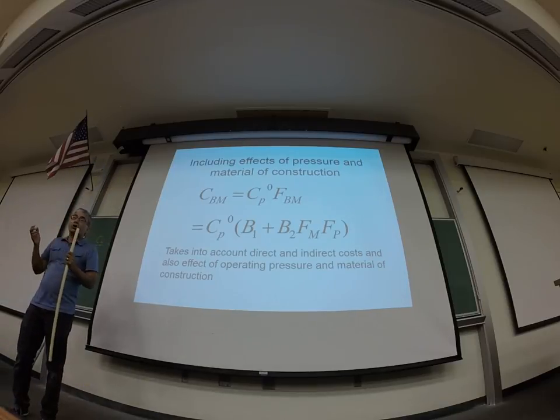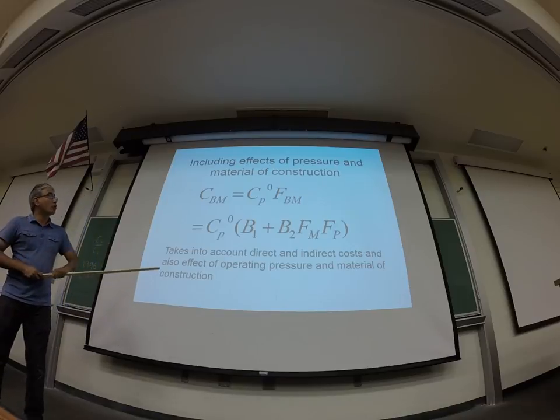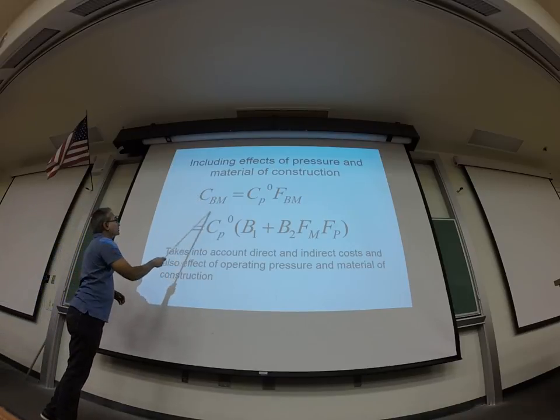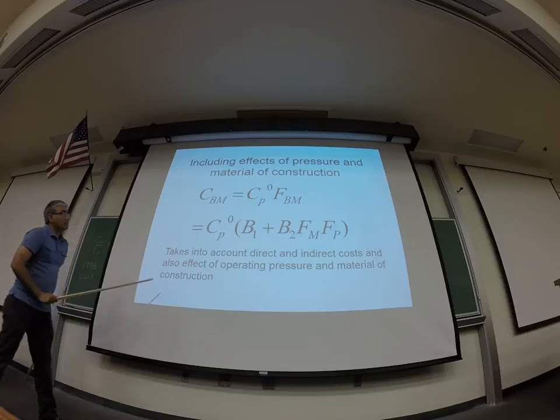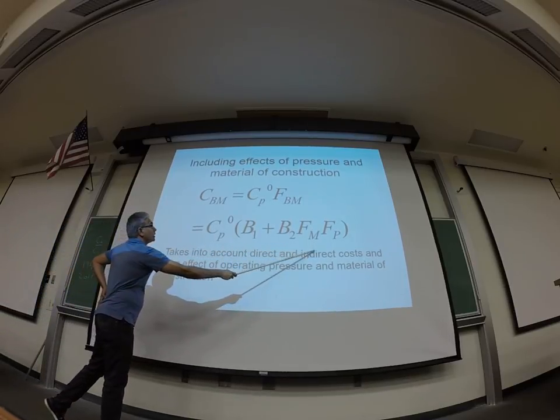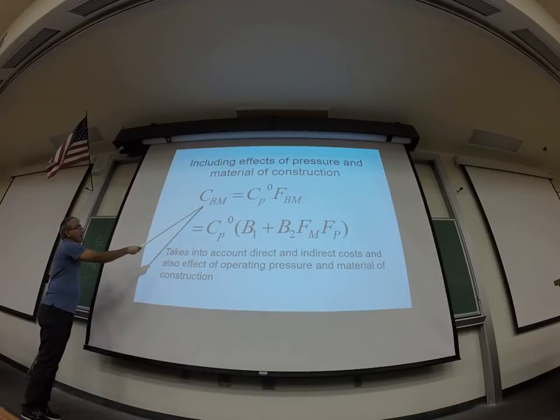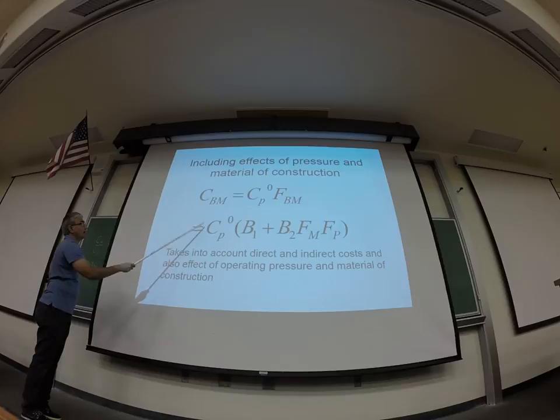The equipment just sitting in your garage is not going to do you any good. Right? You want the plant operational. So you want to, of course, figure out the bare module cost. And the way to figure out the bare module cost is using this equation, where CP0, so we already talked about that CBM is proportional to CP0. We already said that earlier.